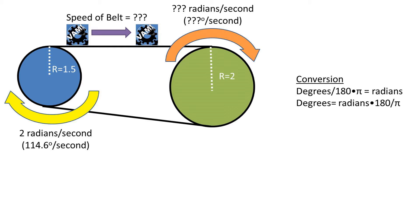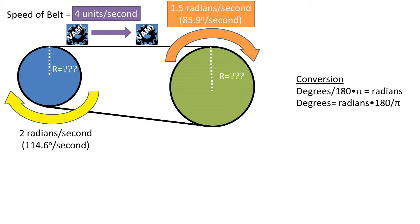It is spinning at an angular speed of 2 radians per second. We want to find the speed of the belt that connects the rollers and the number of radians per second the second roller with radius 2 is spinning at. We will also be solving for the radius of the pulleys later.